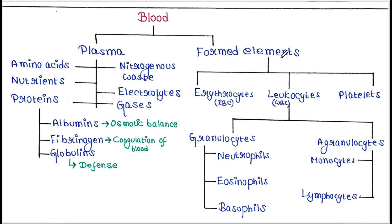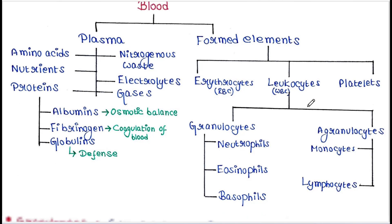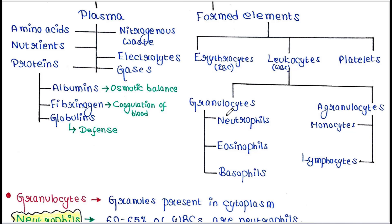Formed elements are mainly blood cells and they are of three types: erythrocytes or red blood cells, leukocytes or white blood cells, and platelets. Leukocytes are of two types: granulocytes and agranulocytes. Granulocytes are of three types: neutrophils, eosinophils, and basophils. Agranulocytes are of two types: monocytes and lymphocytes. We will talk about each one — first leukocytes, then erythrocytes and platelets.